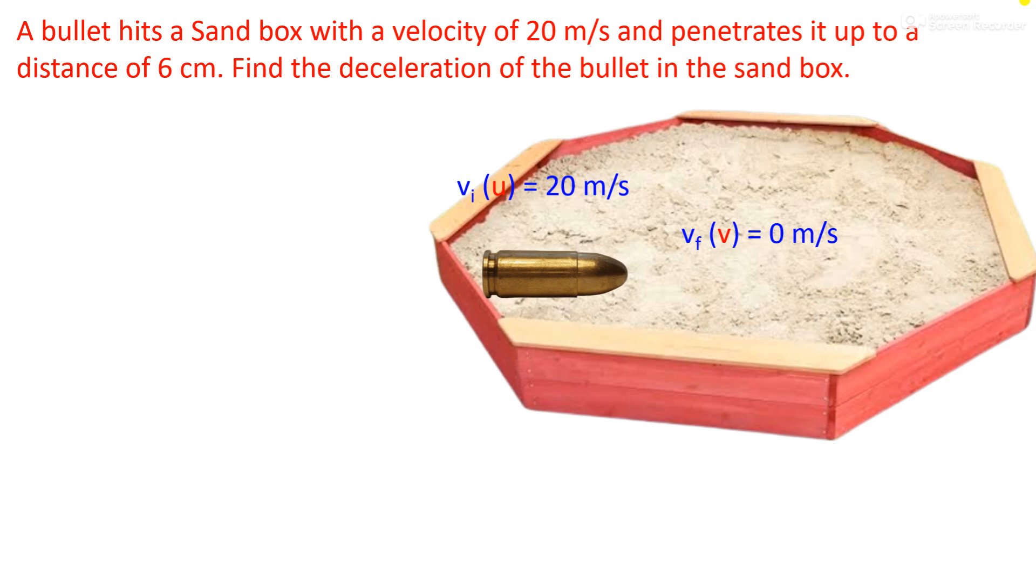The distance which the bullet covers when it penetrates the sandbox is six centimeters. Now, we have 20 meter per second and the distance is six centimeters. So either we have to convert centimeter to meter or meter to centimeter. The best way is to convert this centimeter to meter. As we know, one meter is equivalent to one hundred centimeters, so six centimeters have to be divided by 100.